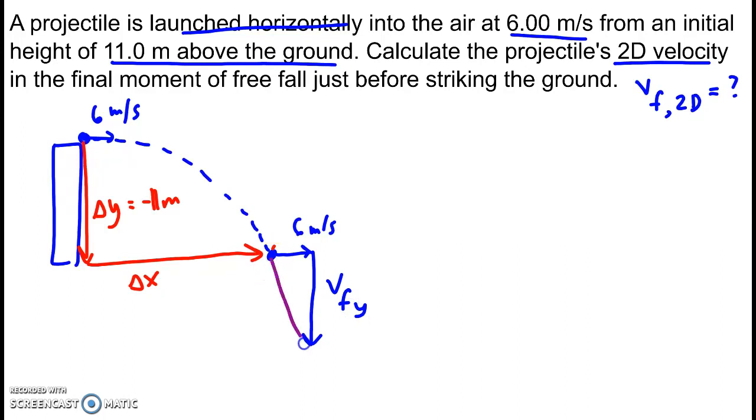This question is asking for the resultant. It's asking for the final two-dimensional velocity. So that's the hypotenuse of this right triangle.